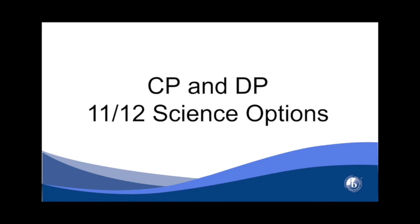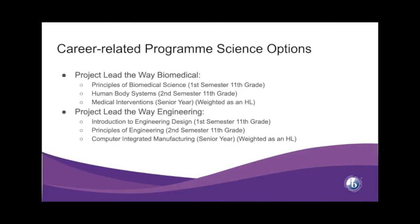This presentation will cover your science options for 11th and 12th grade. For the CP science options, you really have two options: either biomedical or engineering. They're set up the same way. In your junior year, you have two courses, each lasting a semester, and each course meets every day for an hour and a half. For biomed, you have Principles of Biomedical Science in the first semester and Human Body Systems in the second semester. Then in senior year, you have Medical Interventions, which is a weighted course — instead of 4.33 GPA points, it's 5.33 GPA points.